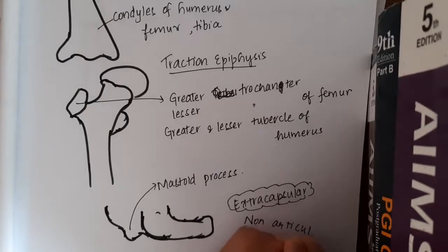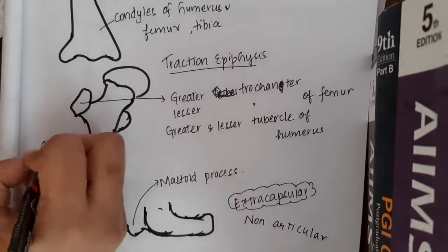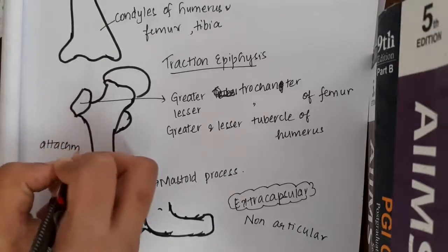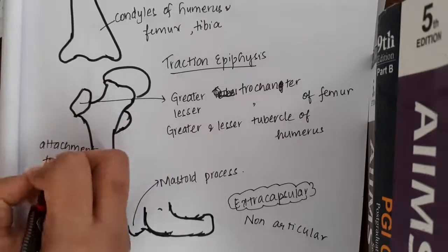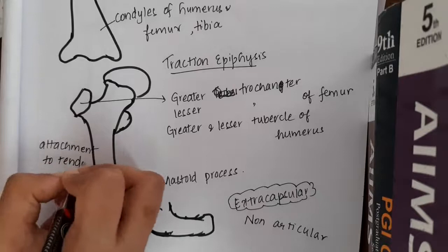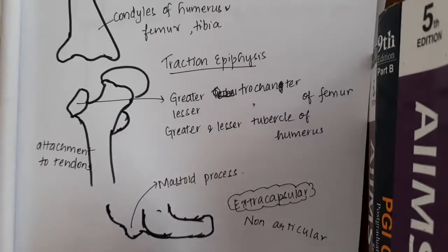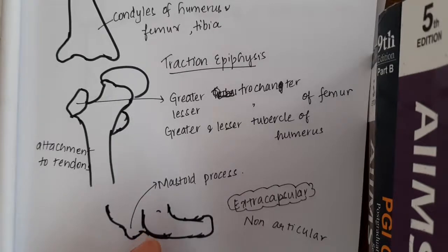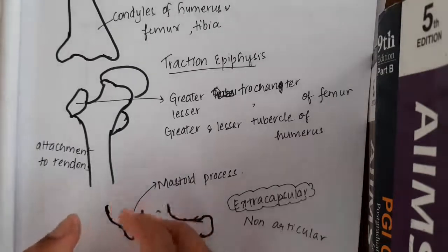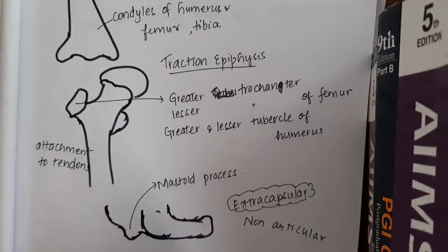They provide attachment. What does these do? They provide attachment to the tendon and because they provide attachment to the tendons, they exert a traction on the epiphysis resulting in traction epiphysis. They ossify late when compared to pressure epiphysis.